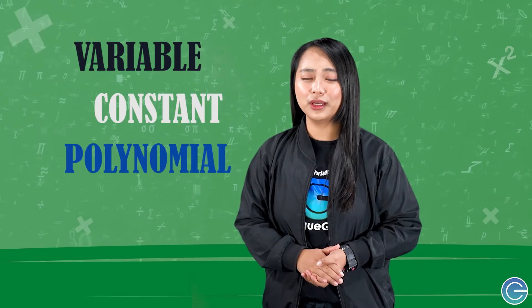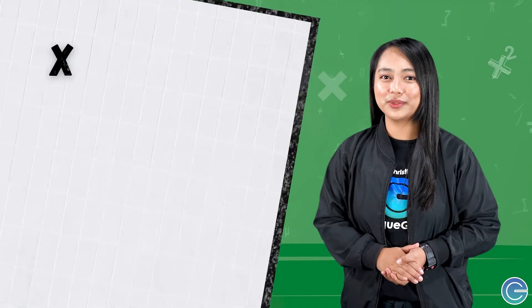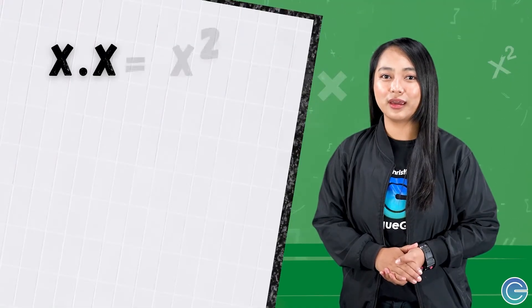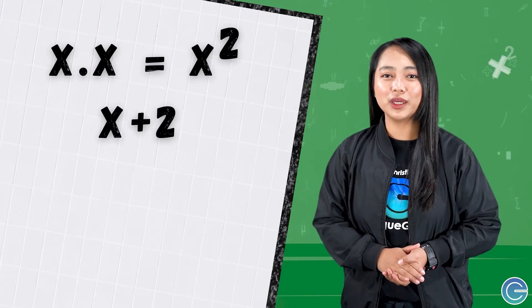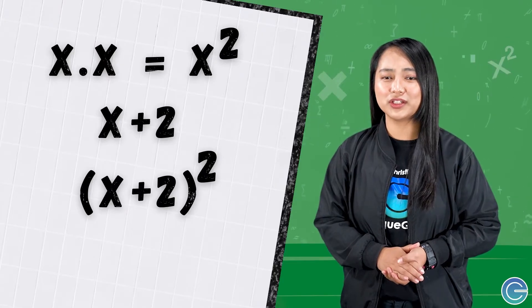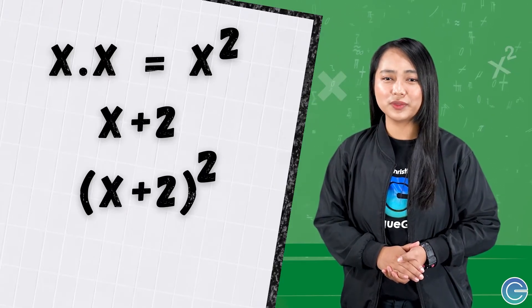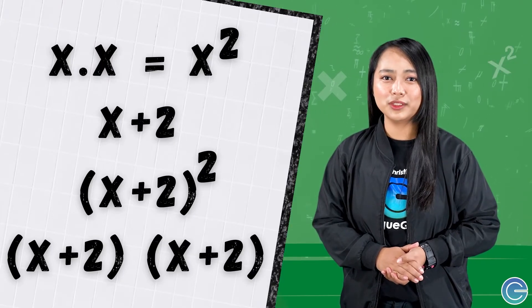Before you go any further, take a second to refresh your memory on what it means to square a number. Regardless of whether it's a variable, a constant, a polynomial — which includes binomials — or anything else, when you square a number you multiply it by itself. So if you square x, you have x times x, which can also be written as x squared. If you square a binomial like x plus 2, you have the quantity x plus 2 times the quantity x plus 2.